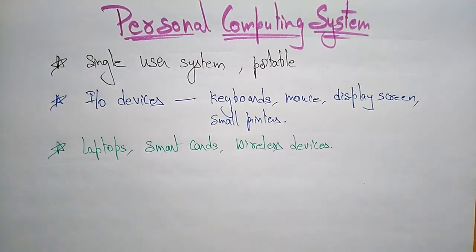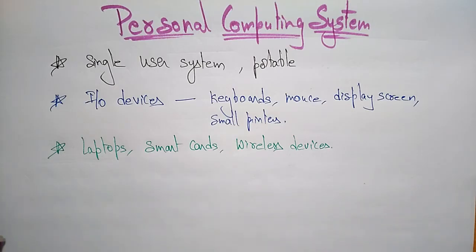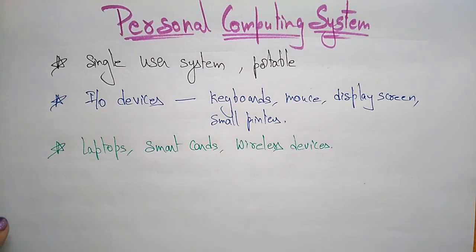These devices are not connected in a network. Your system is just connected to some wireless routers or similar. A system that is just communicating to any of those is also called a personal computing system.